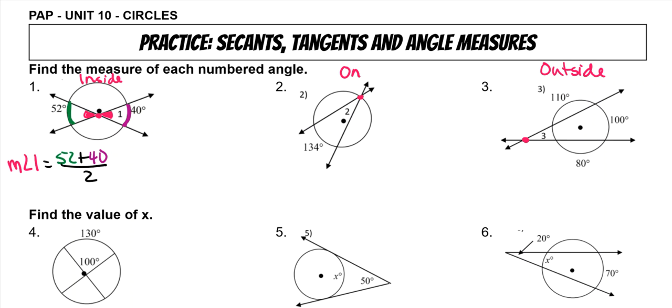Anytime they're on the inside, you're going to add the two arcs together and divide by two, and it has to be the arcs that are between the vertical angles. You could also have to find these arcs if they had given you measures for those, so it can be done the other way around because they're essentially vertical angles.